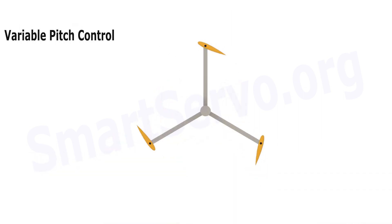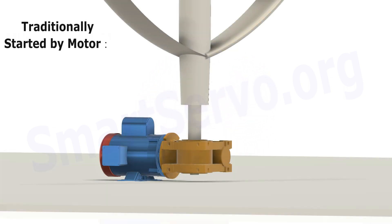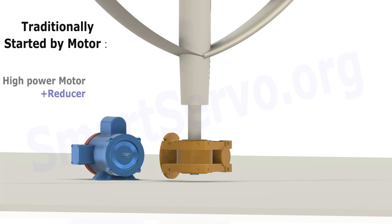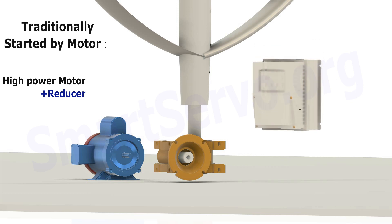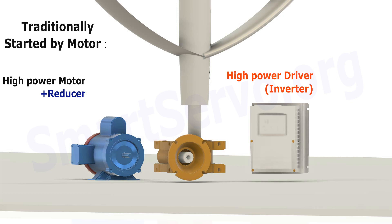There is also a variable pitch method to start, which will not be discussed here due to the complex structure. When the size of the wind turbine is large, the starter motor is also large, usually with a reducer to amplify the torque to drive the wind turbine. In addition, a high-power driver is also required, so it is not only costly but also prone to failure.